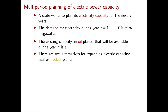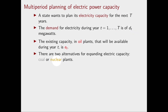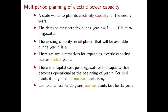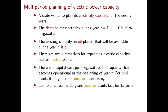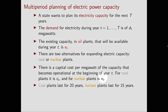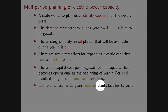In general this oil capacity will not be sufficient to meet the demand, so we can build new power plants — either coal plants or nuclear plants. Building these plants has different costs, expressed in cost per megawatt that such a plant will produce. In particular the cost per megawatt for coal plants is C_t and for nuclear plants is N_t. Note that these costs have a subscript t because they are not the same every year. Coal plants last for 20 years while nuclear plants last for only 15 years.